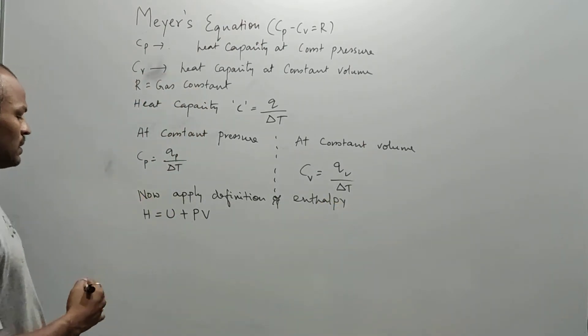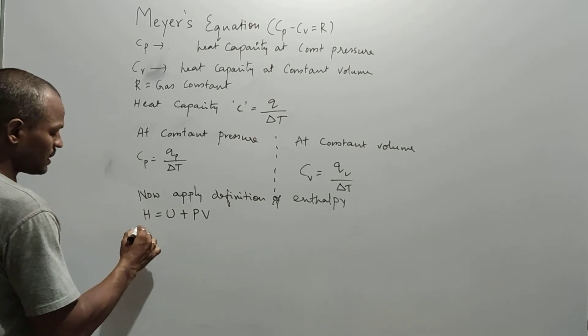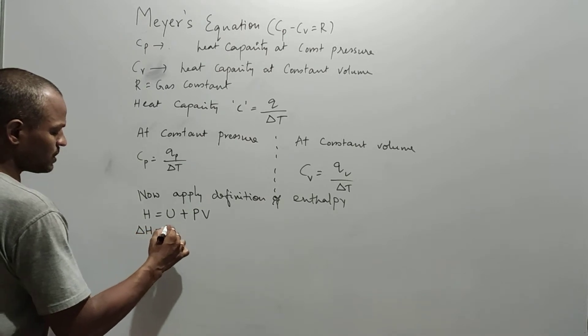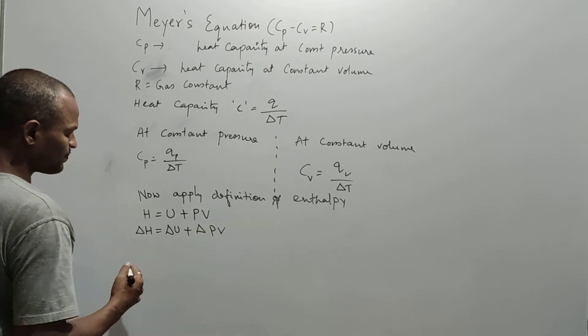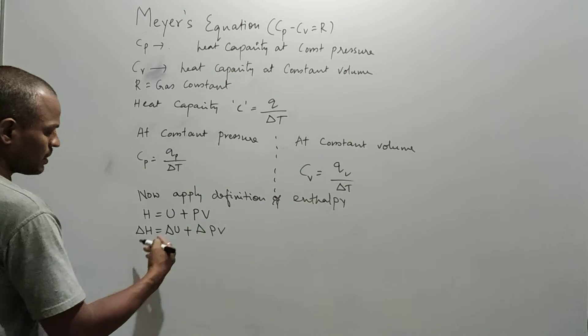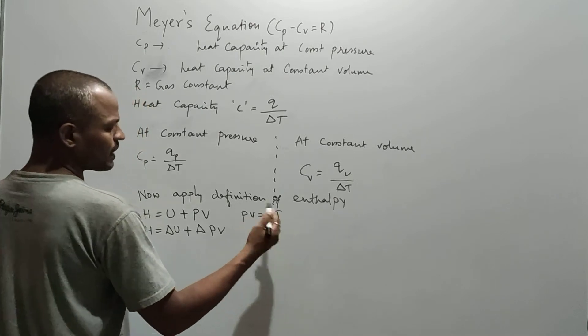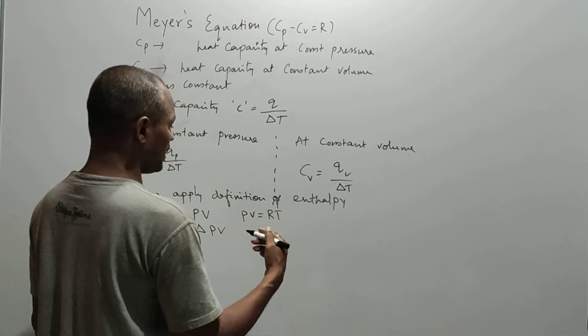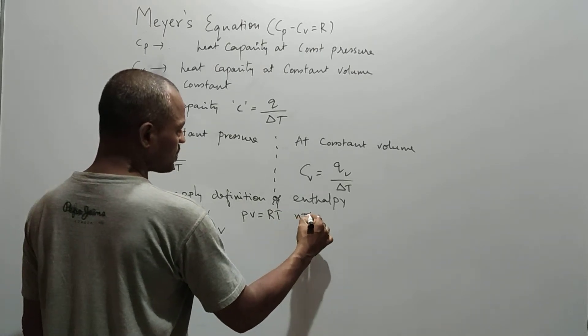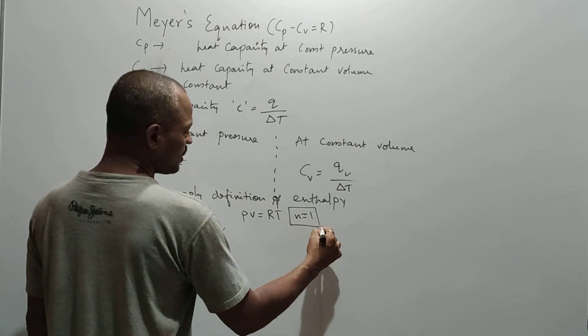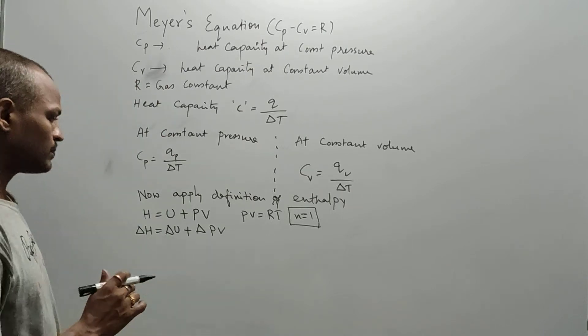Now, in this process, the enthalpy change, nothing but del H, is del U plus we can apply the same as del PV. Here I can write the PV as RT. We know that the ideal gas equation, that is PV equals nRT, where here n equals 1, because it is applied to one mole of gaseous substance in a given volume.